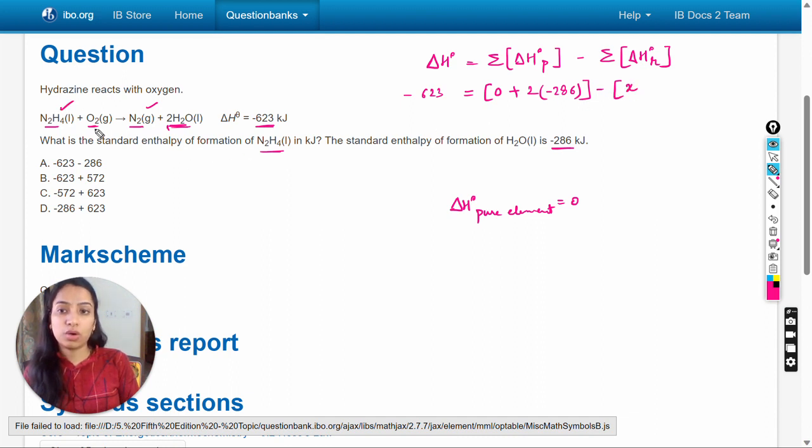Now for the oxygen, again oxygen gas is an elementary substance and enthalpy of formation for a pure element is 0, so again oxygen is 0. Now we will solve this equation: -623 is equal to...